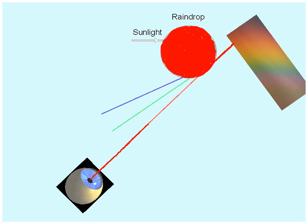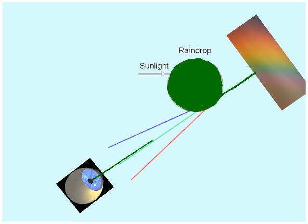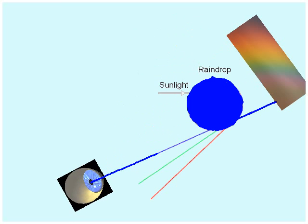And when it's raining, there's not just one raindrop. There are millions and millions. So millions of red raindrops are seen up high in the sky. Down a little lower, millions of green ones. A little lower, millions of blue ones.